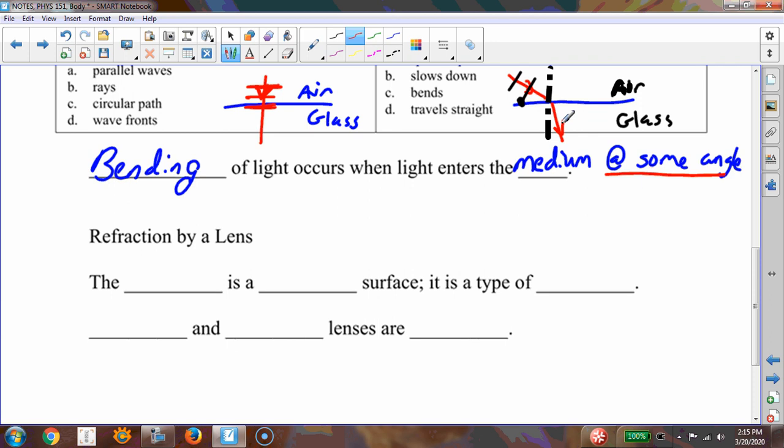So, bending of light occurs when light enters a medium. And that occurs in a lens. So, the cornea is a type of lens. It is a curved surface. It is a type of lens. And part of the reason that we're even really talking about geometrical optics is because we want to know, how does optics describe what happens in the human eye? And then also, how does optics describe what happens when we try to correct vision for the human eye?